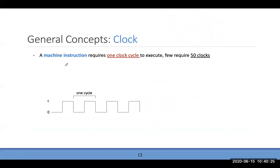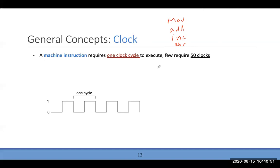Some instructions require just one clock cycle; others like complex operations may require 50 clock cycles. It depends on the instruction type — move, add, increment, shift — each has its own specific cycle count.